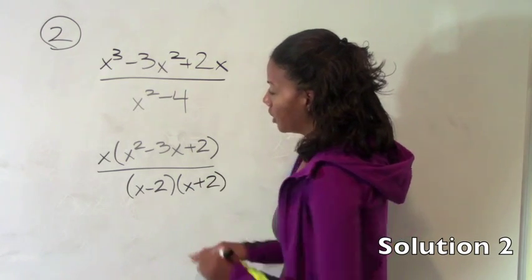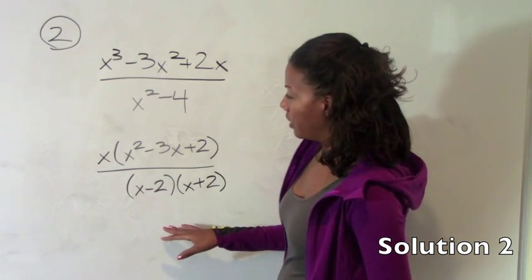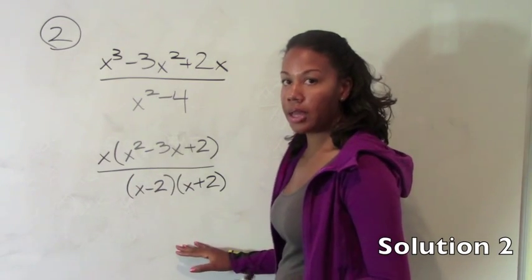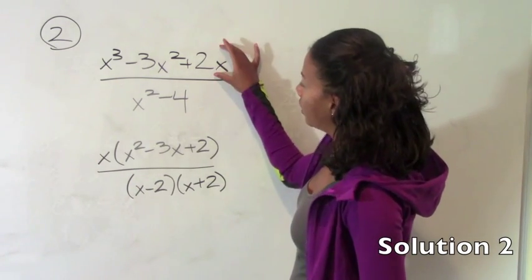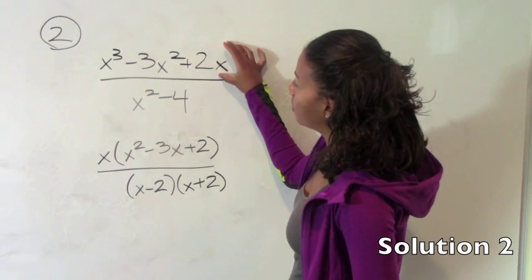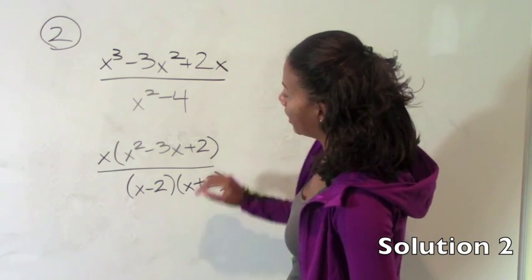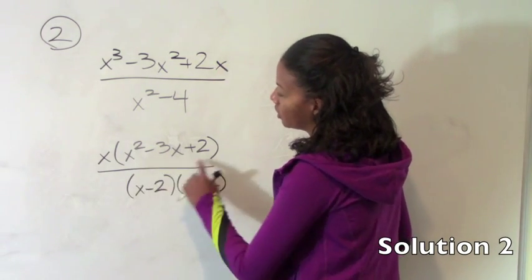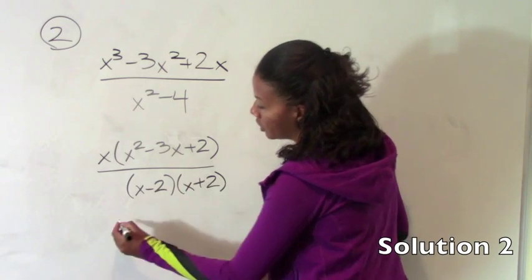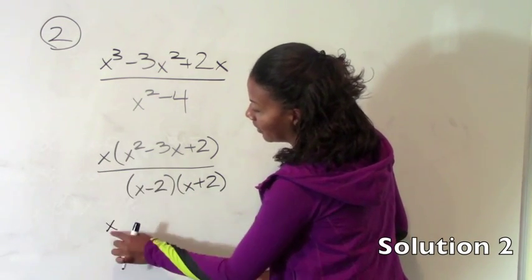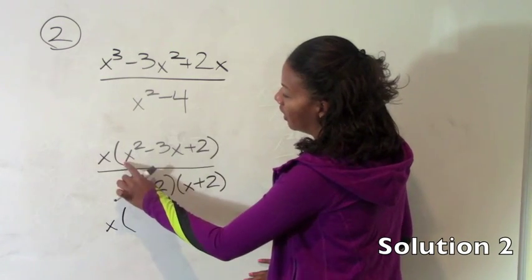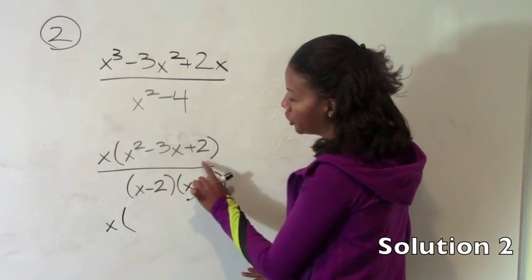So far you'll notice that there's nothing in common that we can cross out. But as I mentioned, there are actually two steps to simplifying or factoring the numerator. So you'll notice that this is a quadratic equation. So what we can do is make sure we bring down that x, but then let's factor x squared minus 3x plus 2.